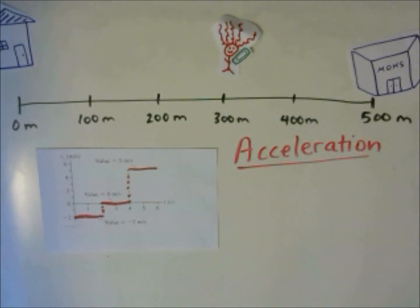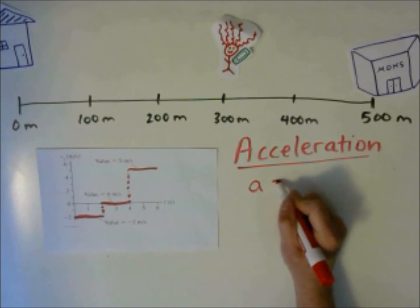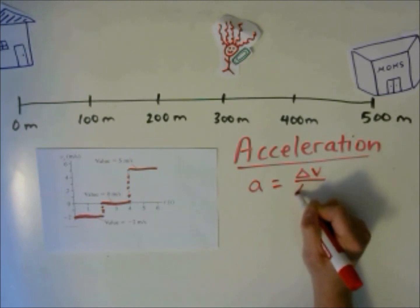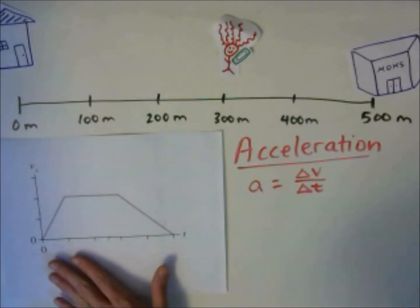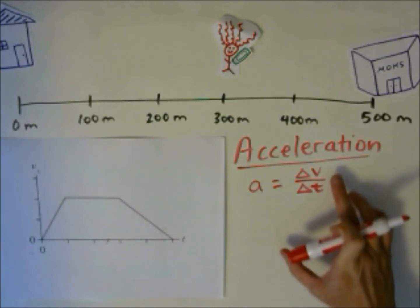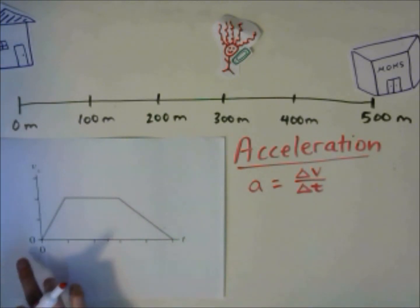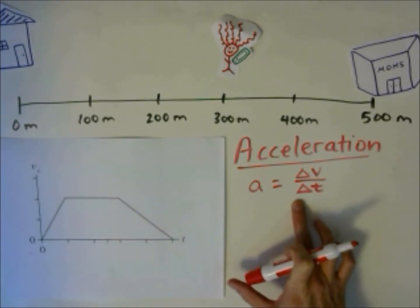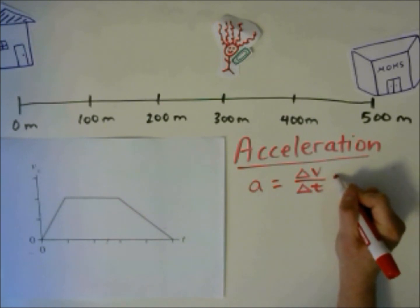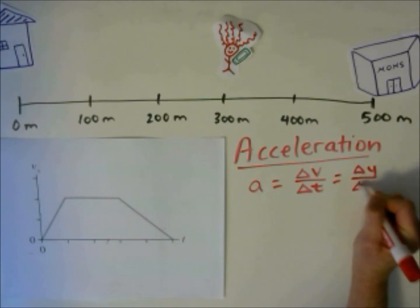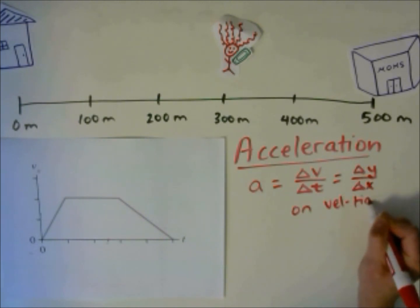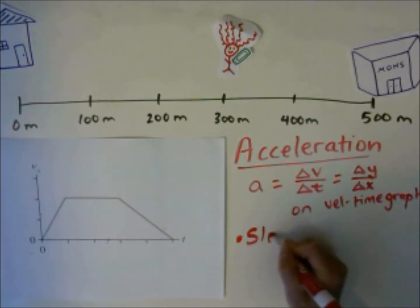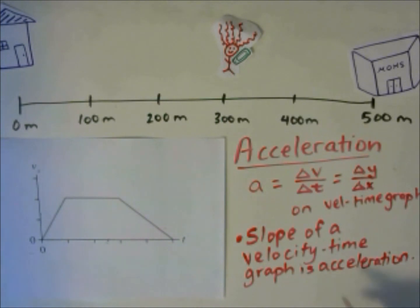We haven't talked about acceleration in detail. Acceleration is the change in velocity. The equation for acceleration is: acceleration equals the change in velocity over the change in time. On a velocity-time graph, the change in velocity is the y-axis and the change in time is the x-axis — so acceleration is equal to the slope of a velocity-time graph. This is the same as delta y over delta x. The slope of a velocity-time graph is the acceleration.